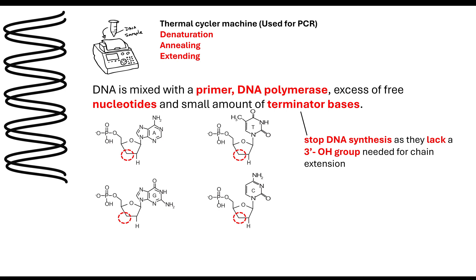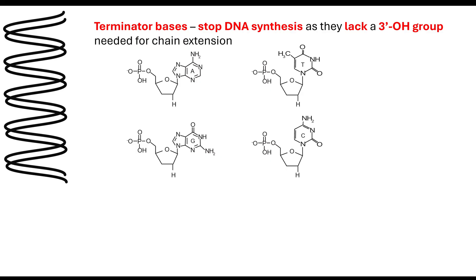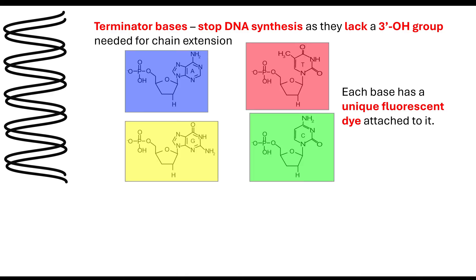They're going to terminate the chain at any point where they form complementary base pairs via hydrogen bonds. Not only do these terminator bases stop DNA synthesis, but they also have a unique fluorescent dye attached to them. That dye will indicate whether it's an adenine, thymine, guanine, or cytosine nitrogenous base — each has its own unique fluorescent dye.